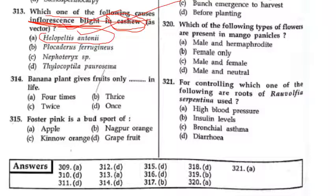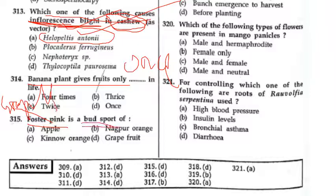Banana plant gives fruits only once — यह तो सभी को पता है. Foster Pink — Graves, याद रखेंगे, Graves Foster Pink grapefruit. Bored spot disease के बारे में भी थोड़ा देखेंगे.